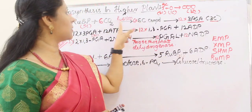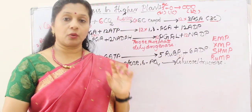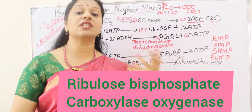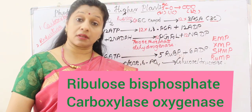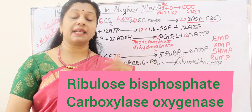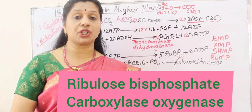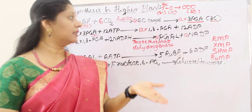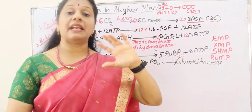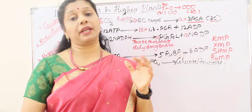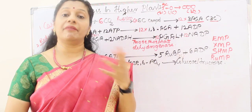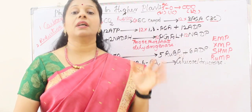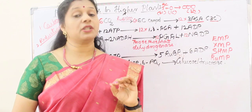The enzyme required for carboxylation is Rubisco — ribulose bisphosphate carboxylase/oxygenase. It can catalyze both carboxylation and oxygenation reactions. Rubisco is one of the largest and most abundant proteins in the world because every green plant conducting photosynthesis contains Rubisco.